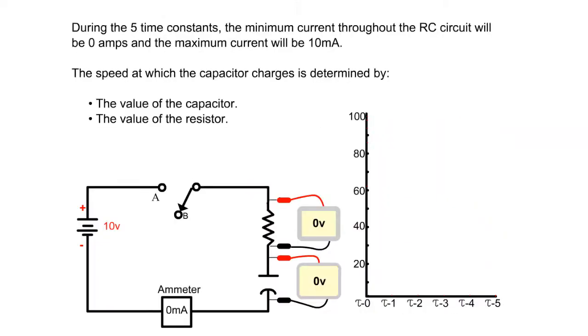During the five time constants, the minimum current throughout the RC circuit will be zero amps, and the maximum current will be 10 milliamps. The speed at which the capacitor charges is determined by the value of the capacitor and the value of the resistor.